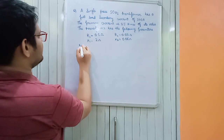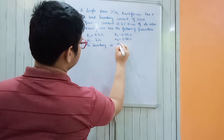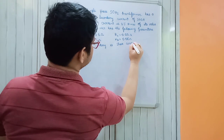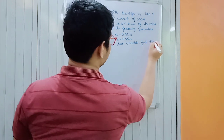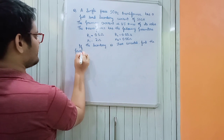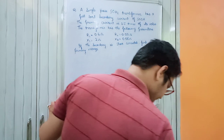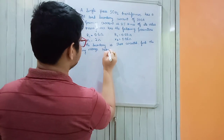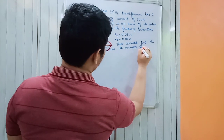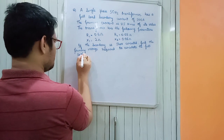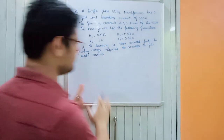If the secondary is short-circuited, find the primary voltage required to circulate the full load current.